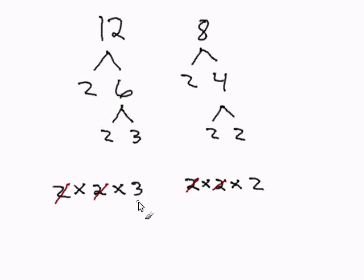Now the remaining factor, I'm going to multiply it by the other number. So 3, I'm going to multiply it times 8. 3 times 8 is 24.